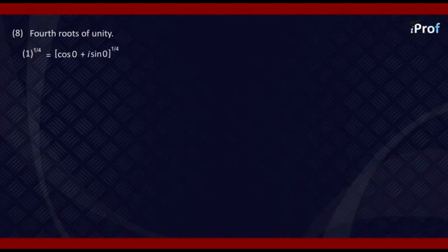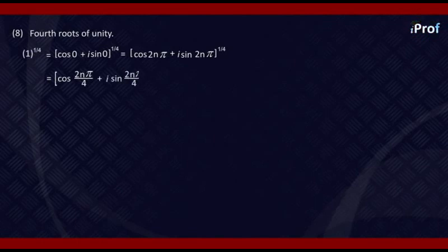This can be written as generalization: [cos(2nπ) + iota sin(2nπ)]^(1/4), which equals, using De Moivre's theorem, cos(2nπ/4) + iota sin(2nπ/4), where n = 0, 1, 2, and 3.